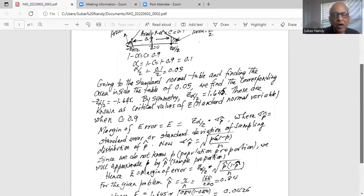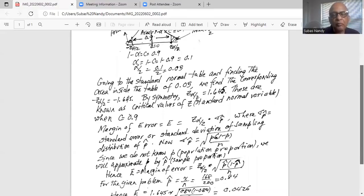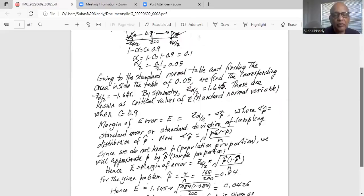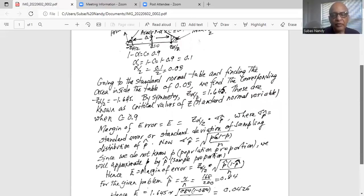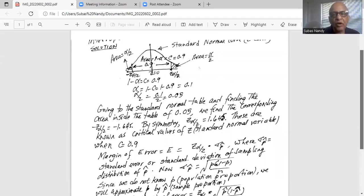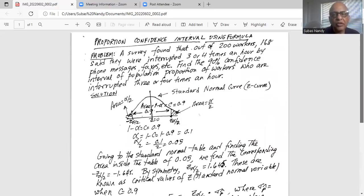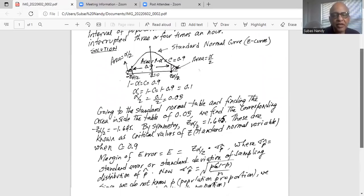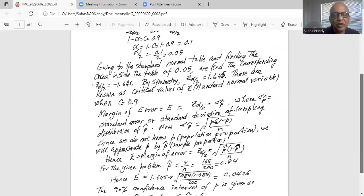For the given problem, p hat is x over n. What is x? x is the number, 168 people out of 200 workers said that they are interrupted. So x is 168 and n is 200, giving me a p hat value sample proportion of 0.84.